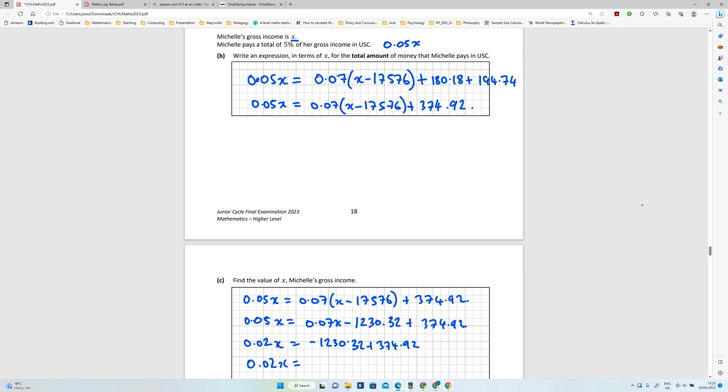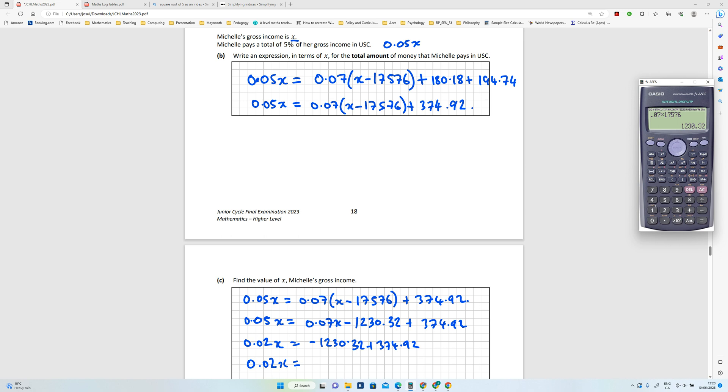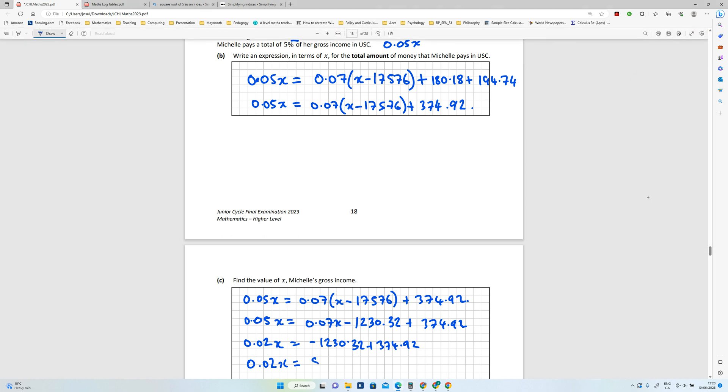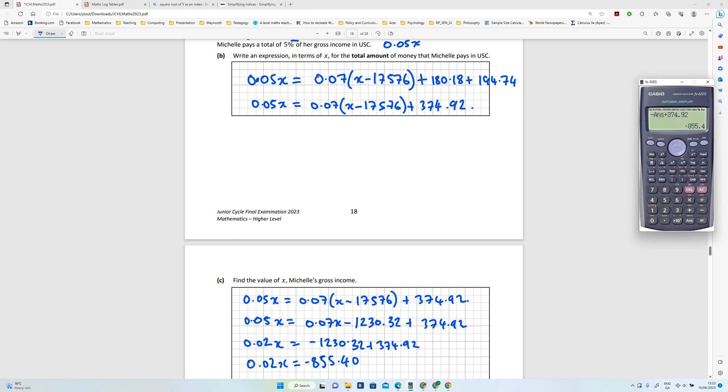Okay, and now we need to calculate negative 1,230.32 plus 374.92. So that's what I'm left with there, negative 855 point, but it's a minus, isn't it? Yeah. Okay, okay, so then all I need to do is divide that number by negative 0.02.